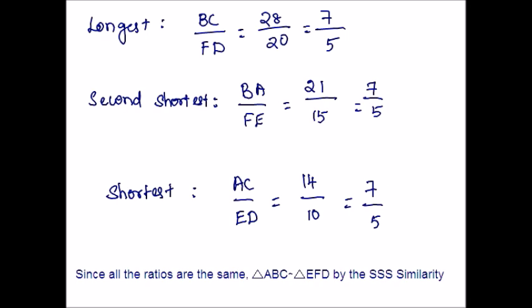So far we were proving that two triangles are similar. Now you just have to go in reverse — you take the concept that they are similar and solve for the unknown side.